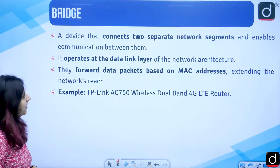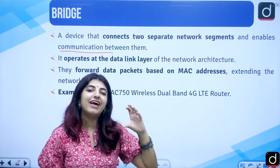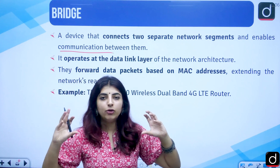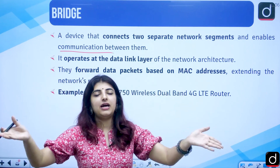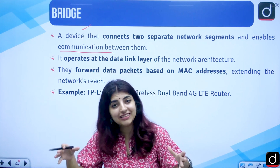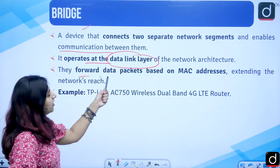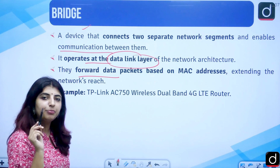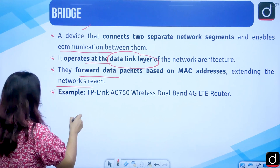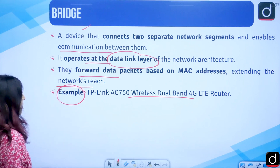Another network device is the bridge. A bridge connects two separate network segments and enables communication between them. For example, connecting a WAN (wide area network) to a LAN — the bridge literally acts as a bridge between two different networks. It operates at the data link layer of the network architecture and forwards data packets based on MAC address, extending the network's reach. An example is the TP-Link AC750 wireless dual-band 4G LTE router, which can act as a bridge.